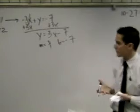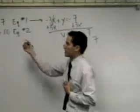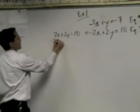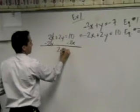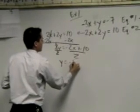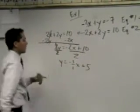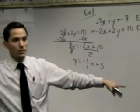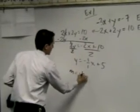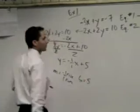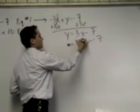Now let's look at the other equation: 2x plus 2y equals 10. I'm going to subtract 2x from both sides and then divide both sides by 2. Why did I leave this number as a fraction rather than just writing negative 1? Because I need a rise and a run — so it's negative 1 as my rise and positive 1 as my run. My beginning point is 5.